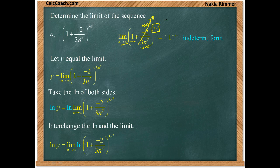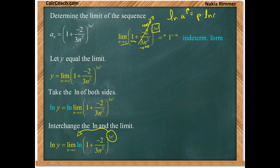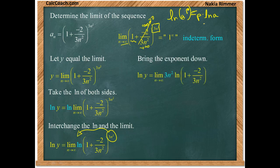Now we can employ the property of logs. The whole reason we started this process was to take this exponent and bring it down in front. The natural log of a to the p is p times the natural log of a. So we bring the exponent down and have three n squared times the natural log of one plus negative two over three n squared.